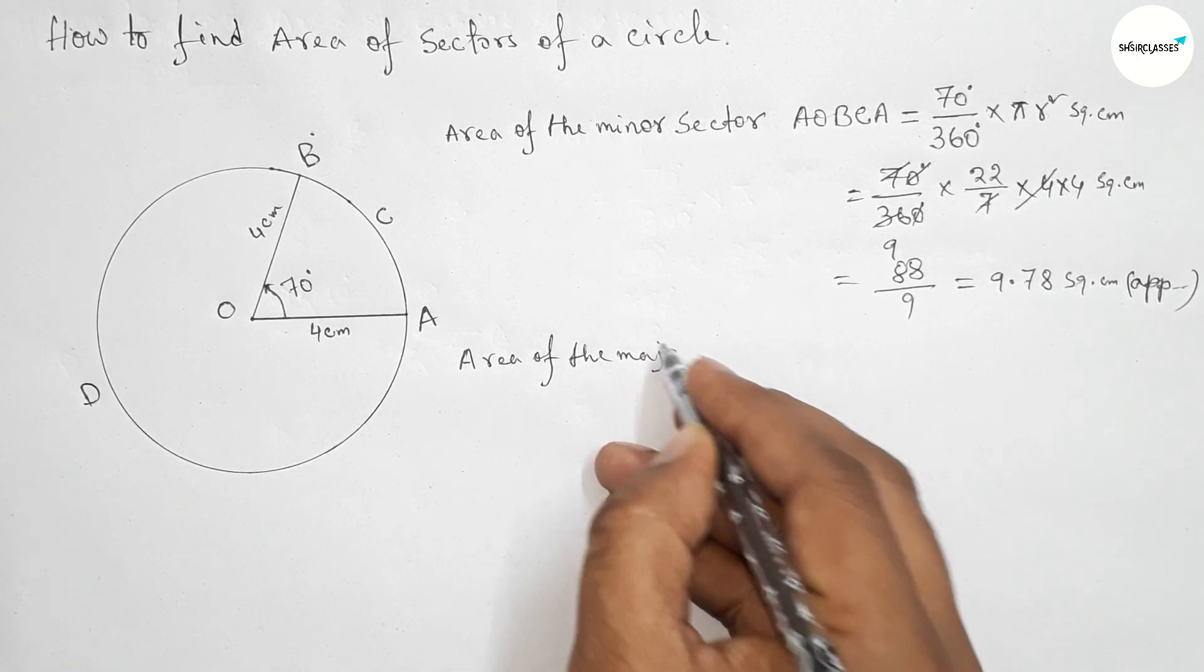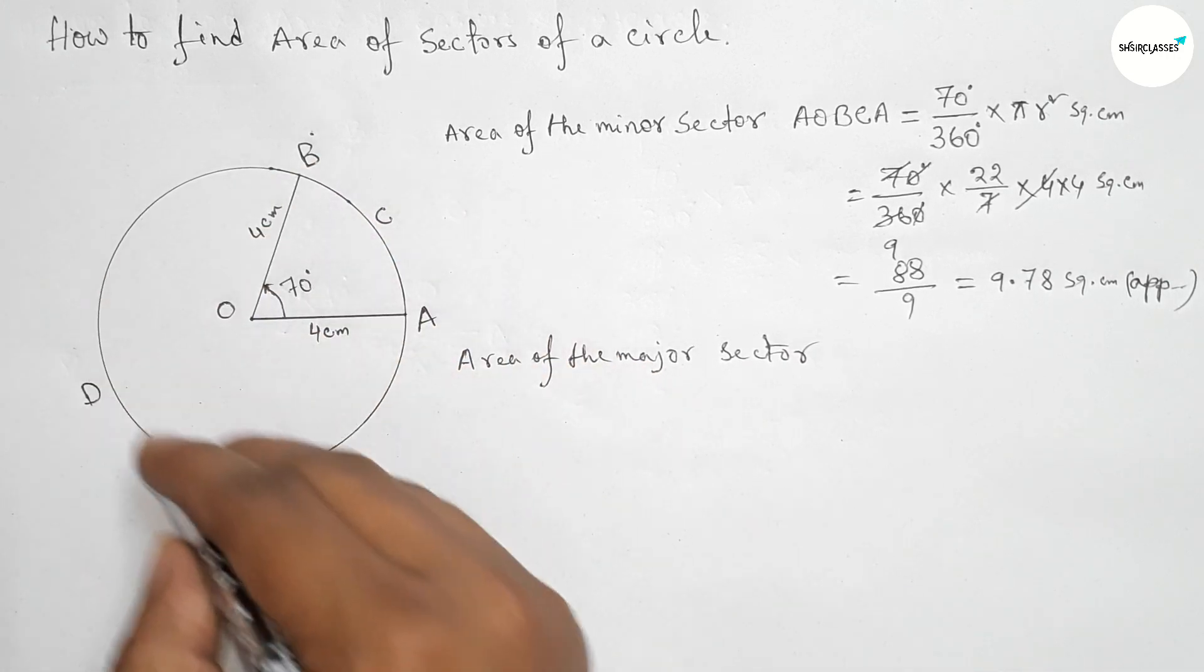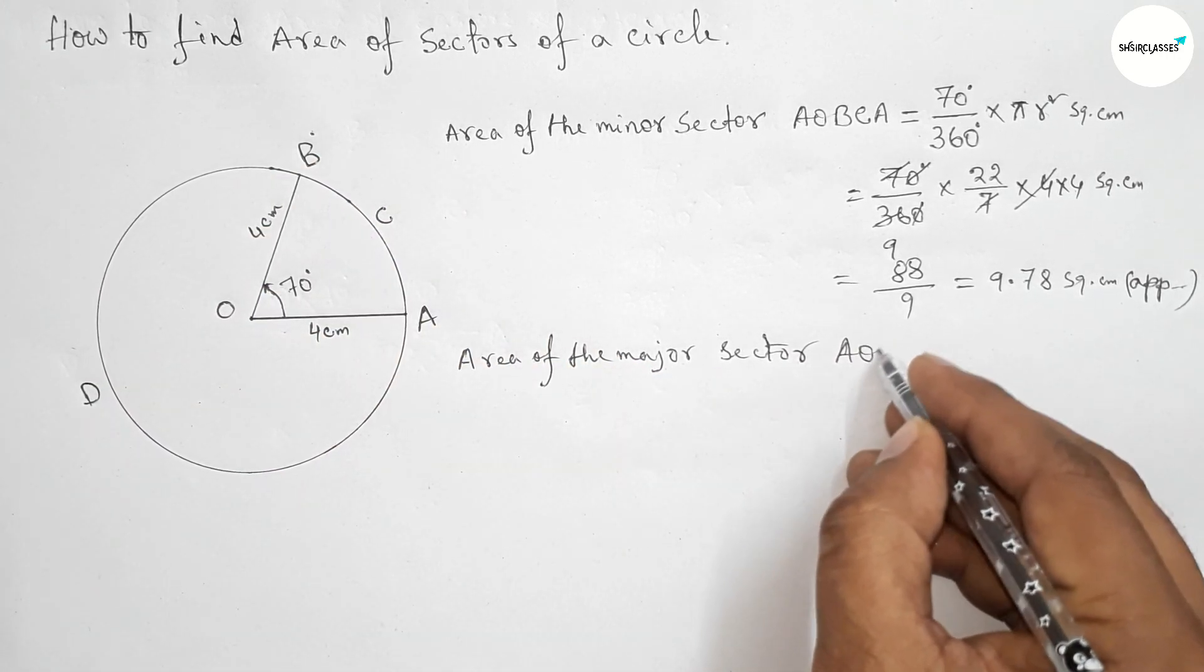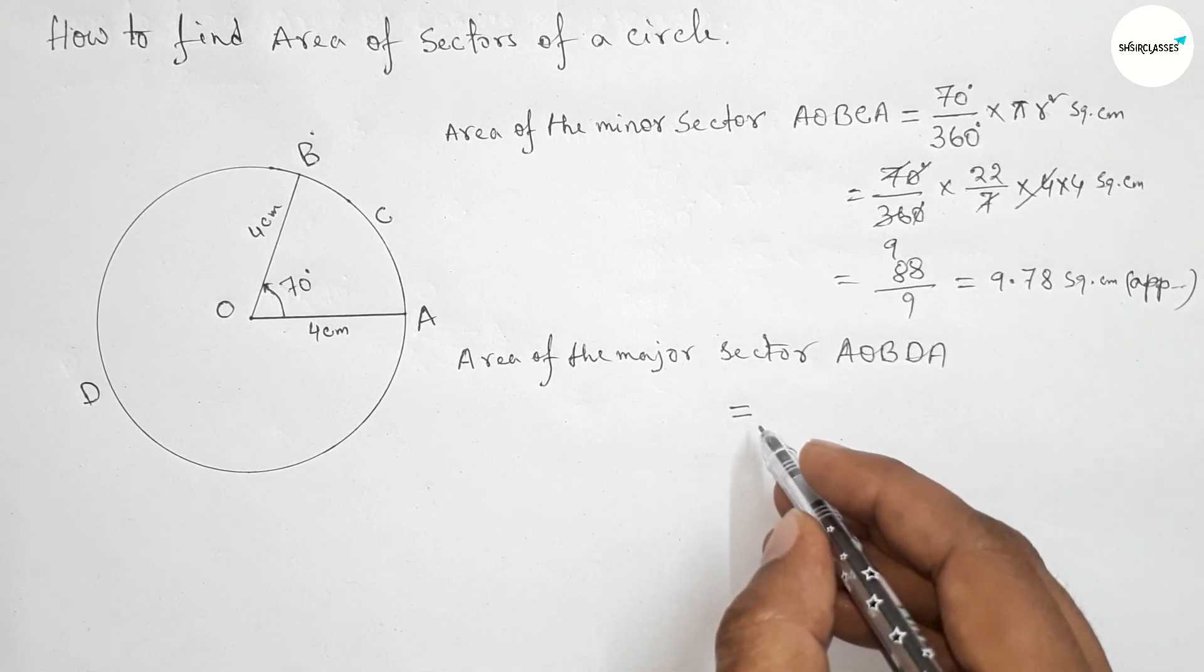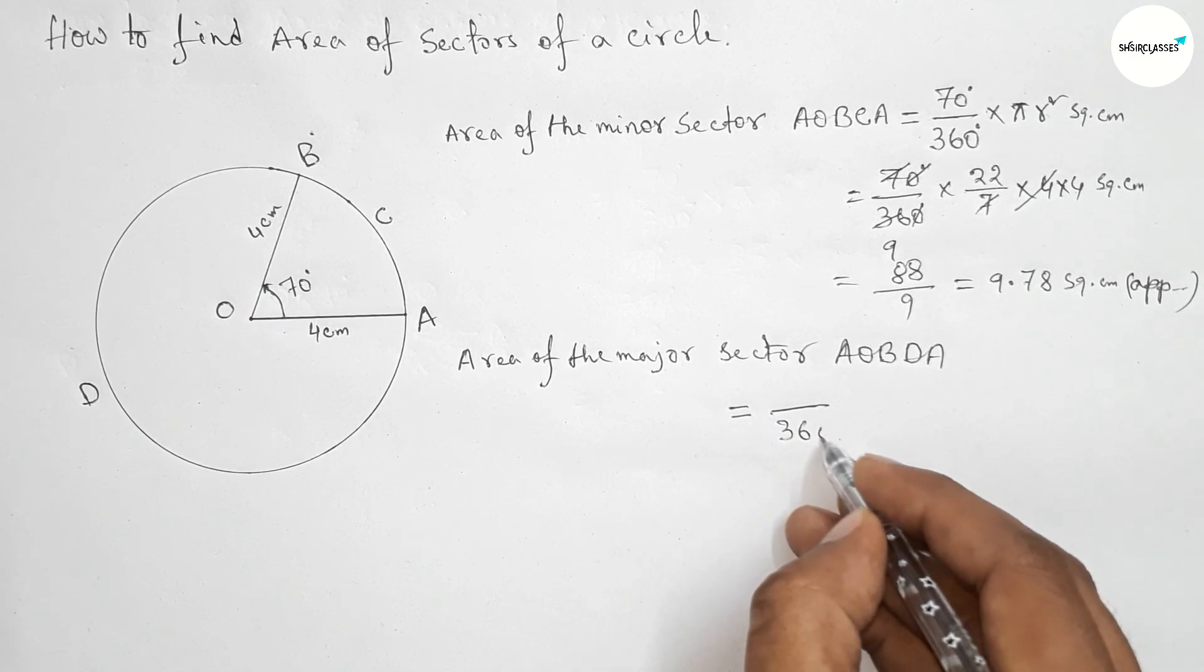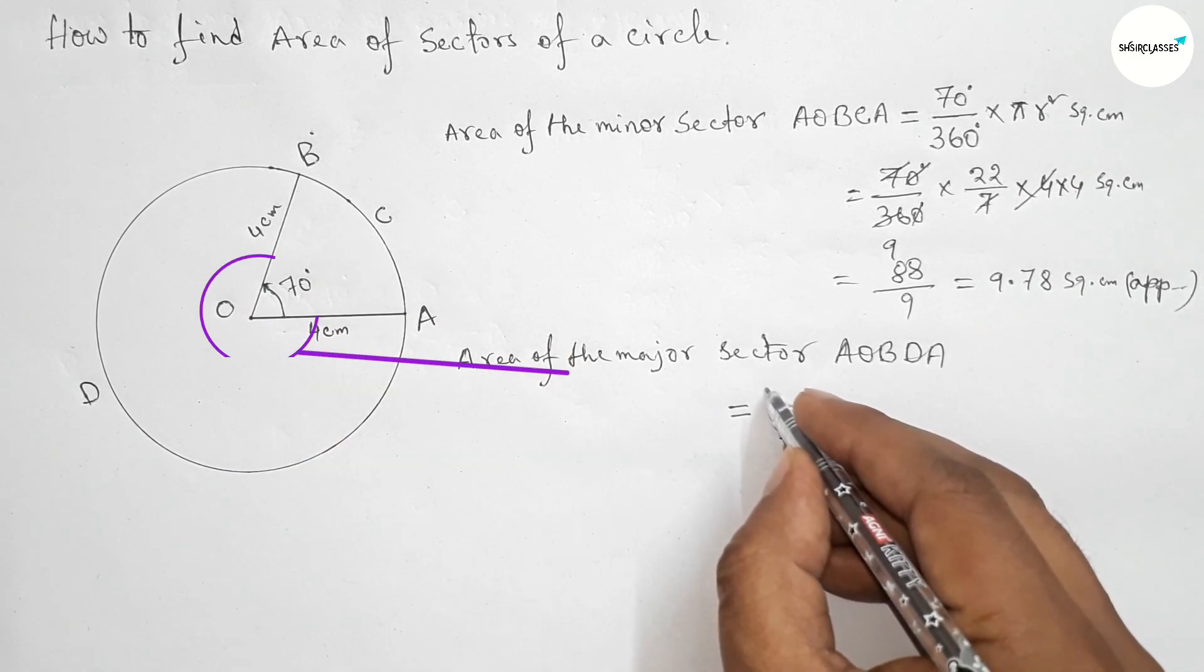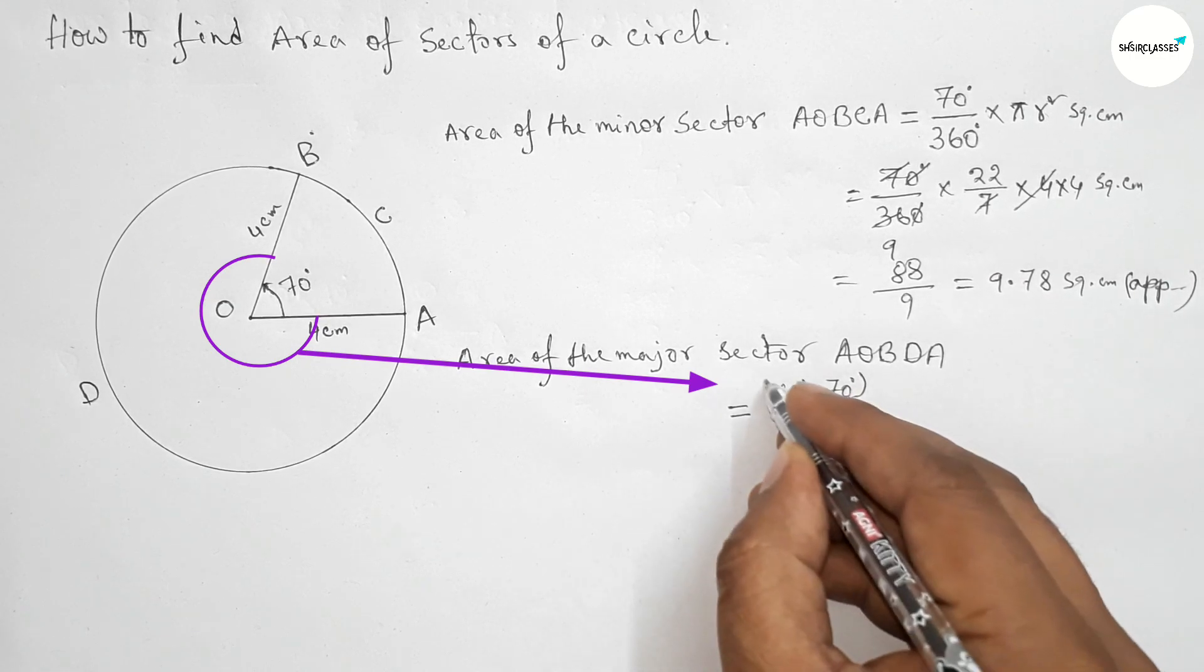Find the area of the major sector AOBDA. By similar way, first write down the angle in fraction. So total 360, and now 360 minus 70 degrees.